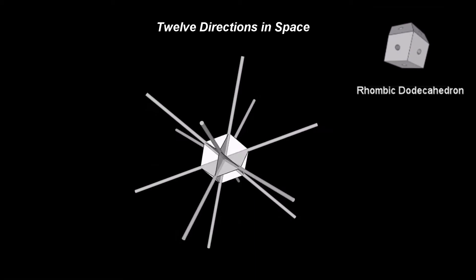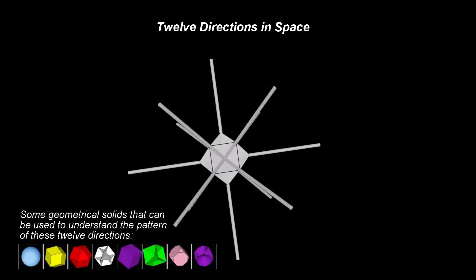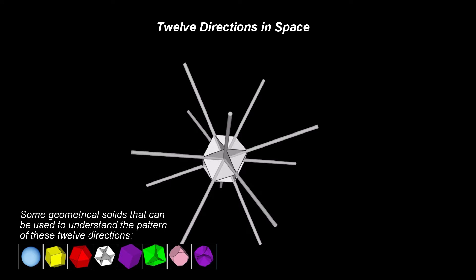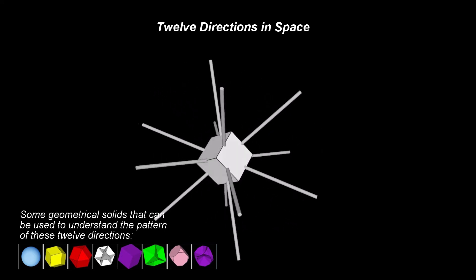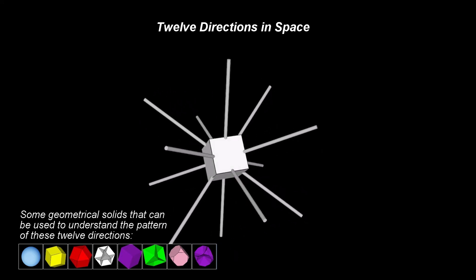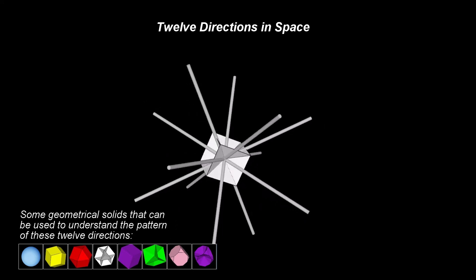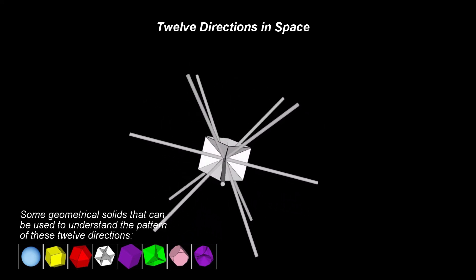Other shapes that obey this pattern can also be used to visualize this. For example, let's look to the cubeoctahedron first. The cube, the truncated cube, and few other solid shapes also have this symmetry pattern.